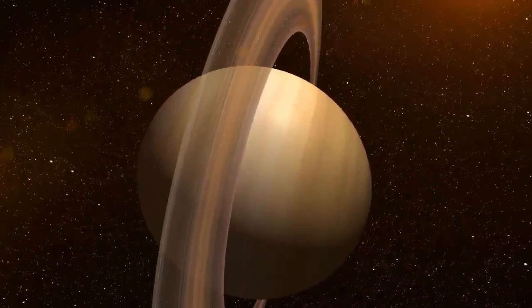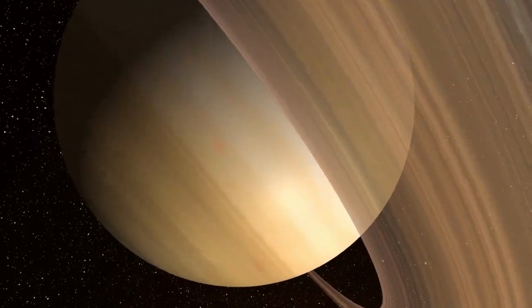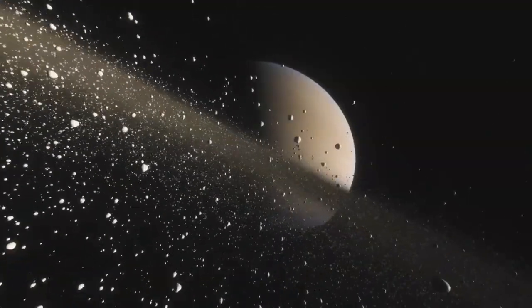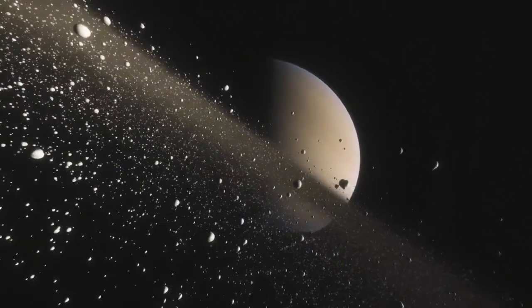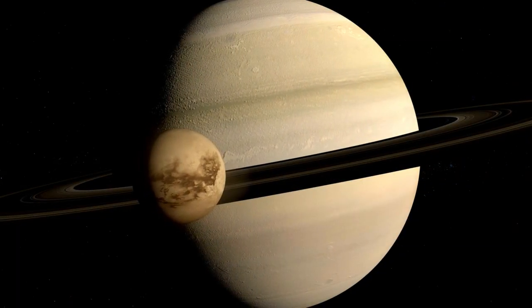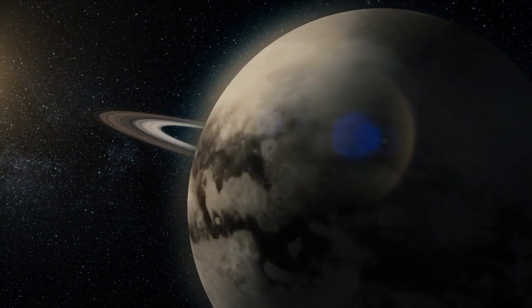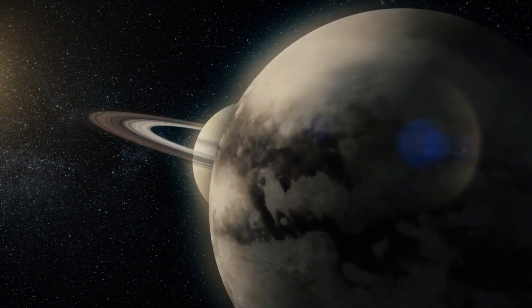Saturn is the second largest planet in our solar system and is also a gas giant. It is known for its beautiful rings, made up of ice and dust particles. Saturn's moons are also fascinating, with Titan being the largest and the only moon in the solar system with a thick atmosphere.